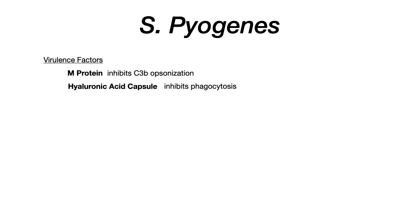The M protein inhibits C3b opsonization. Opsonization is when a bacterial pathogen gets tagged with C3b and specialized macrophages in the spleen recognize it for clearance. The M protein in Strep pyogenes inhibits this process, making it harder for the immune system to carry out opsonization and making the organism more virulent. The hyaluronic acid capsule is related — it inhibits phagocytosis, which is the end goal of opsonization.